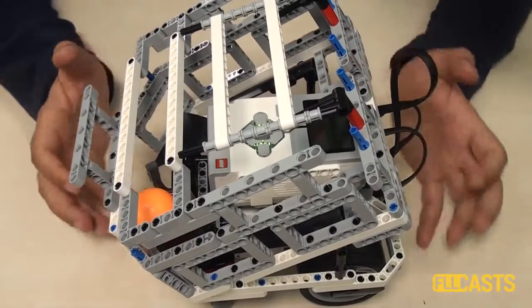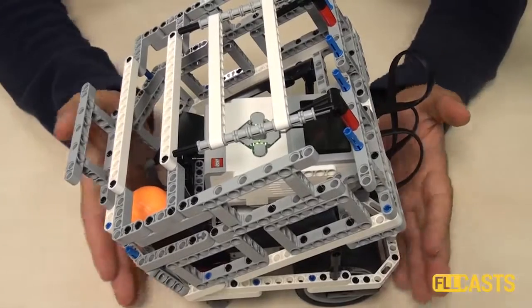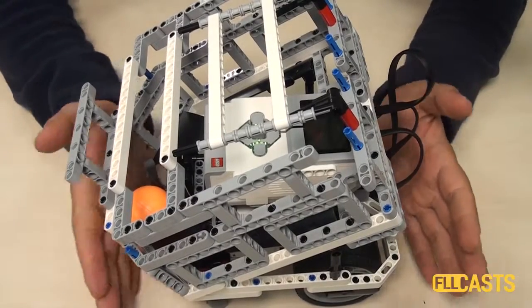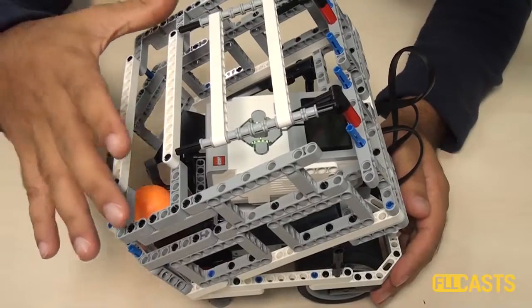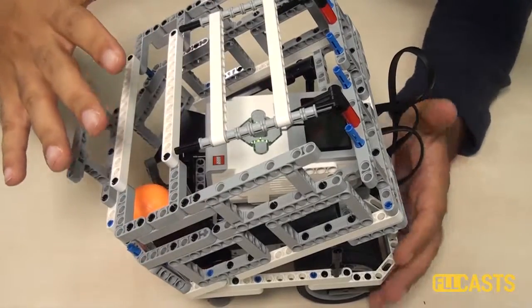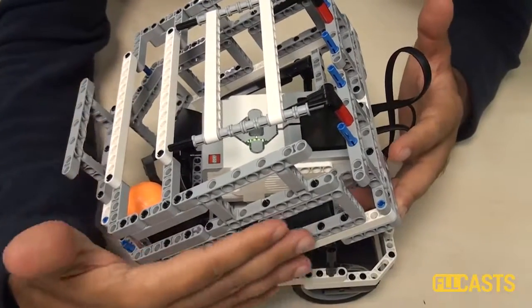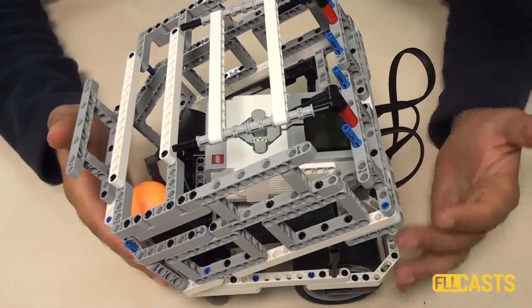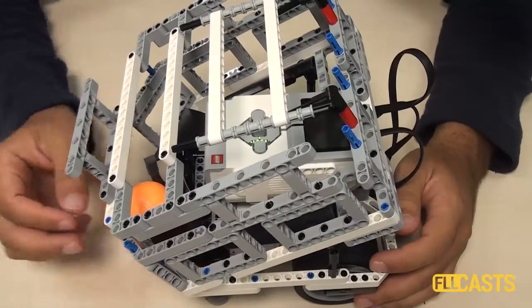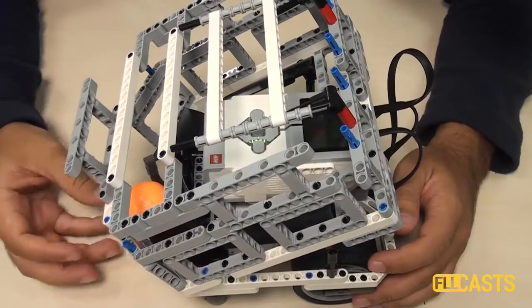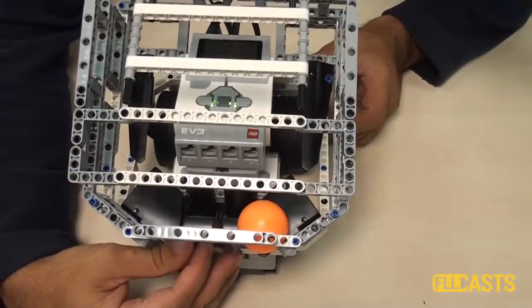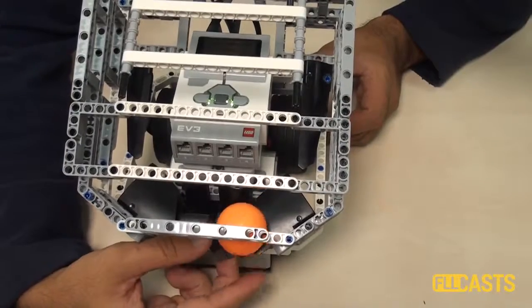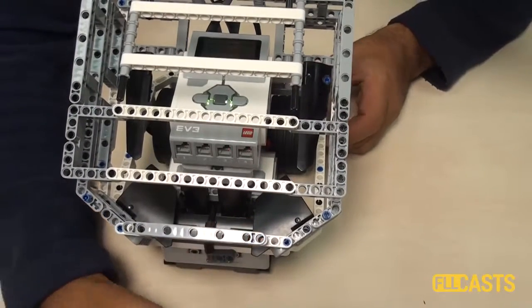Our idea was to build a robot that is in the specified dimensions with a container at the top. You can see that this container is tilted at a certain angle. The idea is that the balls would fall on the field when we move with the motor. Here we have a motor, and when the motor rotates, some of the balls will fall on the field.